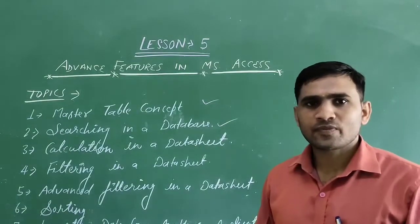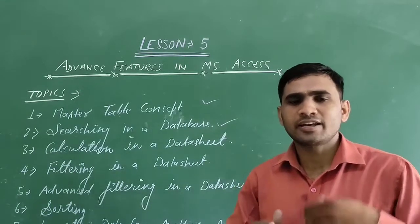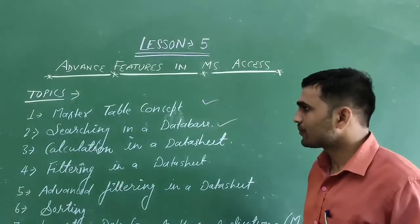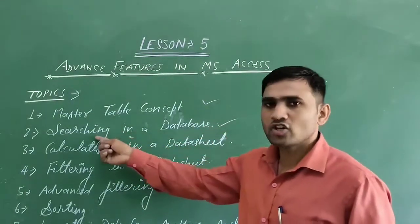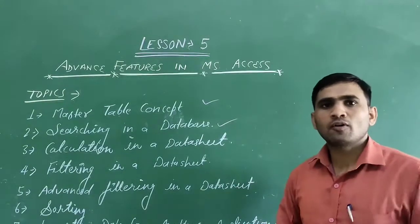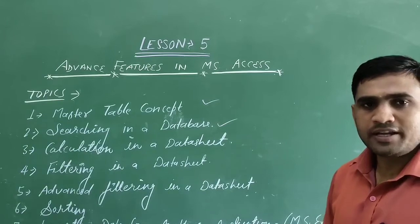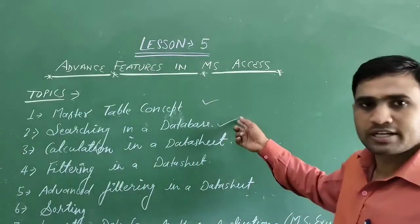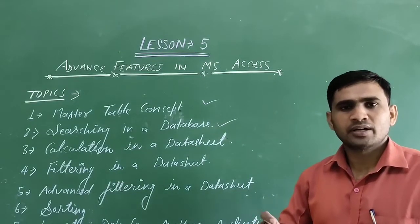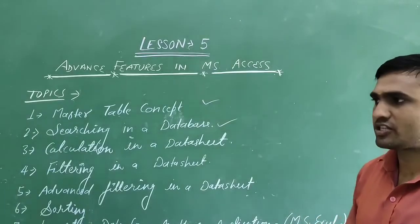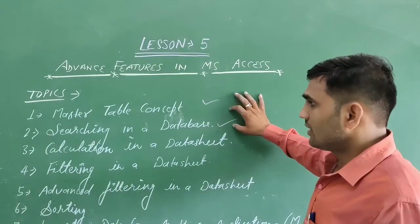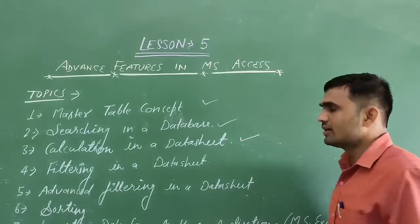The second topic is searching a database. In a database, if we want to search any information — suppose we want to search a student's name, date of birth, or contact number — we can use the search option. We already discussed the navigation bar, using which we can move or jump to any record. But with the search option, we can search any particular information such as student name, DOB, contact number, and so on. After that, we can do some modification, change, or delete records.